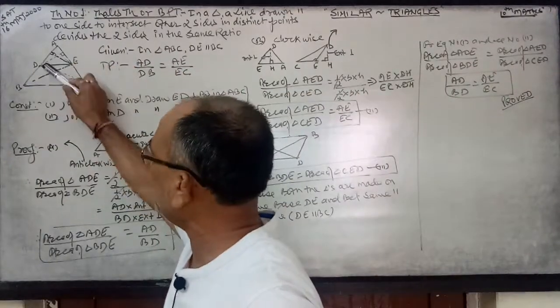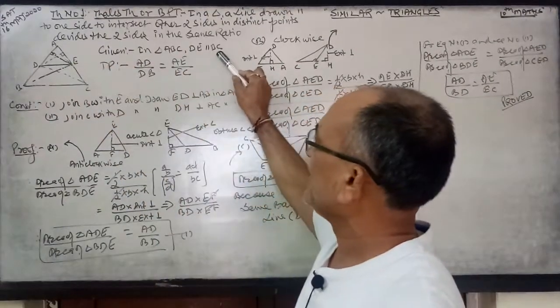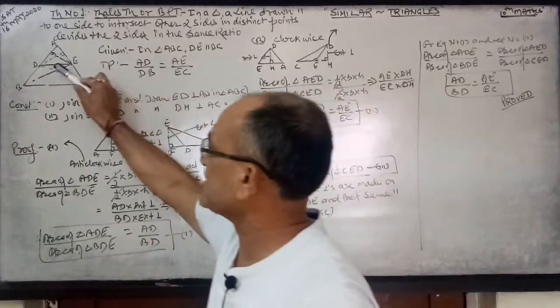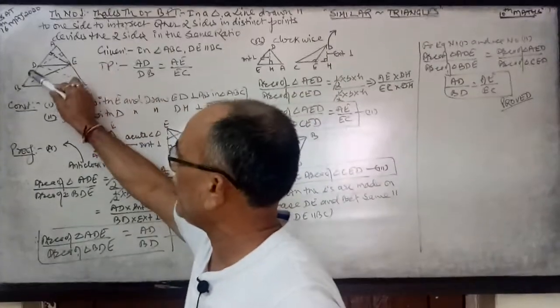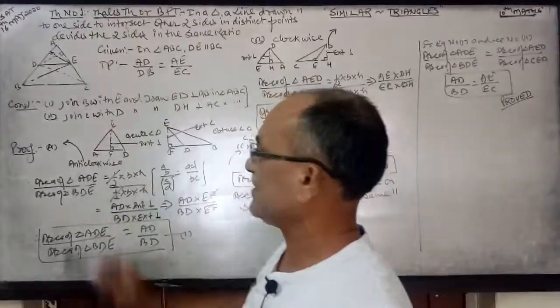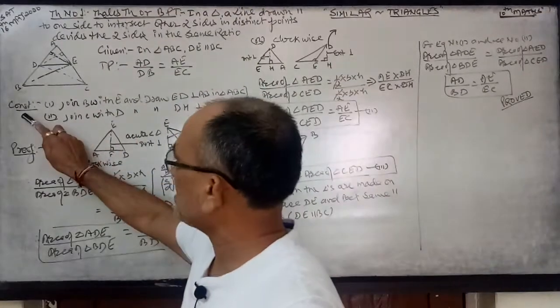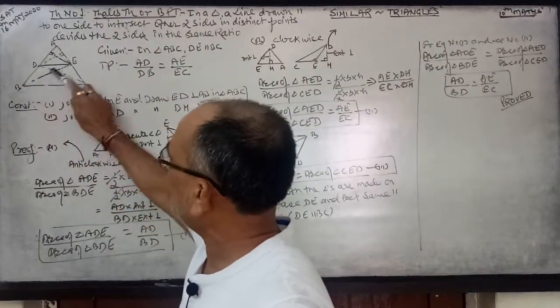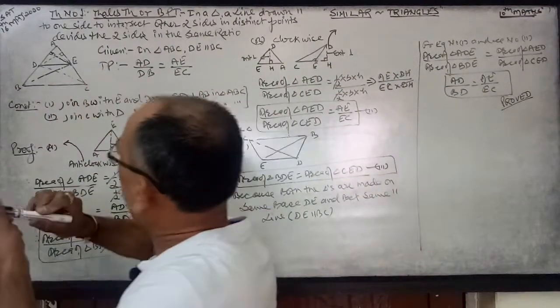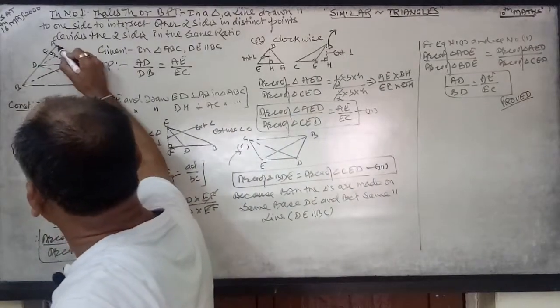In triangle ABC, DE is parallel to BC. It is given, and you have to prove AD over DB equals AE over EC. Now I am doing the construction for this. Join BE and draw perpendicular EF on AB.